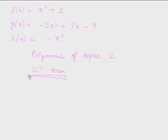The other terms are optional. For instance, in one example there is no x term, and in another there is no x term and no constant term. But the x² term must be the highest degree term and it must be present — so these are called quadratic functions.